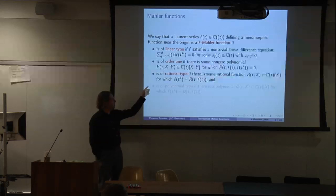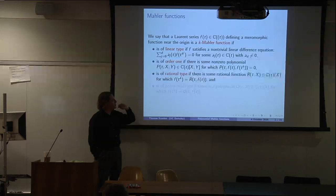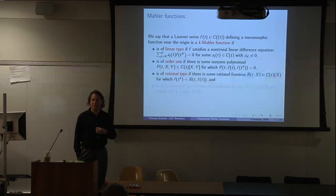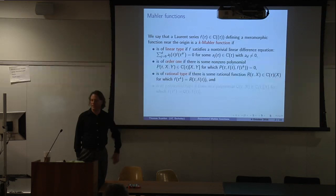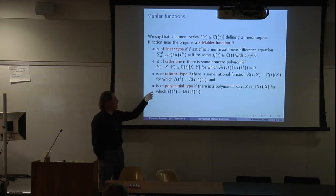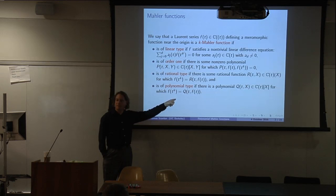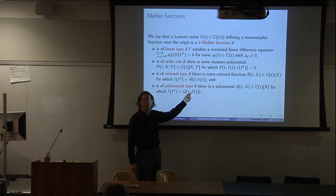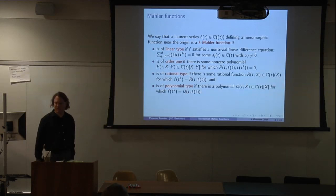We'll specialize the order one equations to the rational type. This is the special case of the order one equation where, after clearing denominators, I'm looking at P being Y minus R(T)X. And we'll focus on the specialization of the rational type where the equation is given by a polynomial — so when you make the substitution T goes to T to the K, you can re-express your function as a polynomial in F, where the polynomial has coefficients from the rational functions. So just definitions for now.